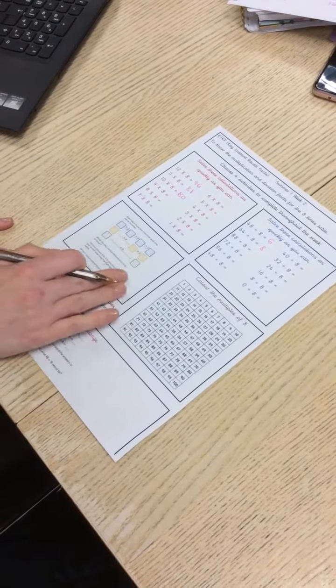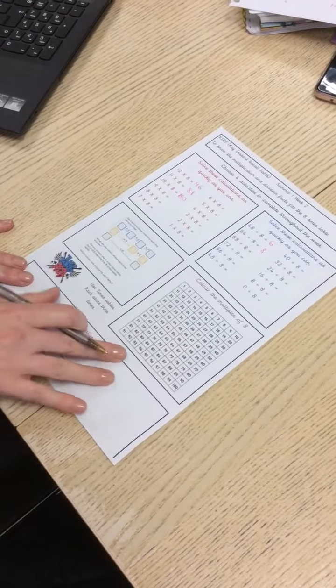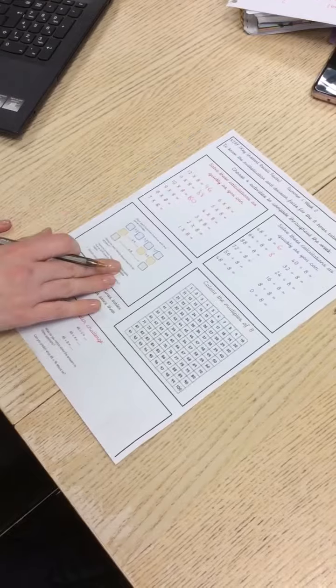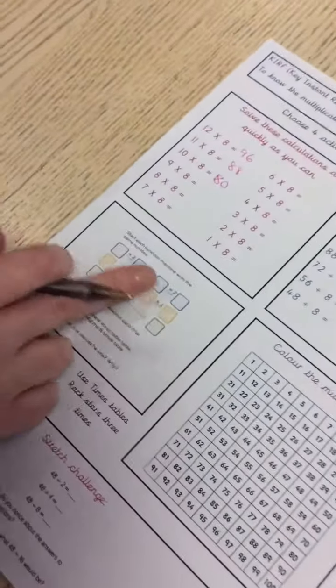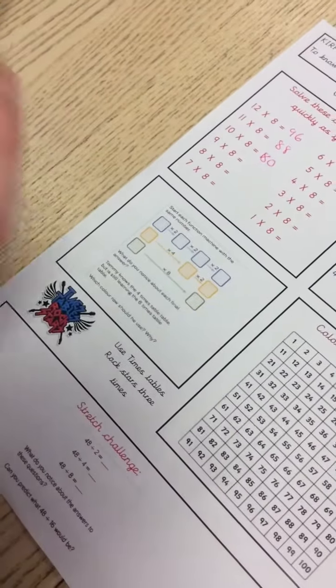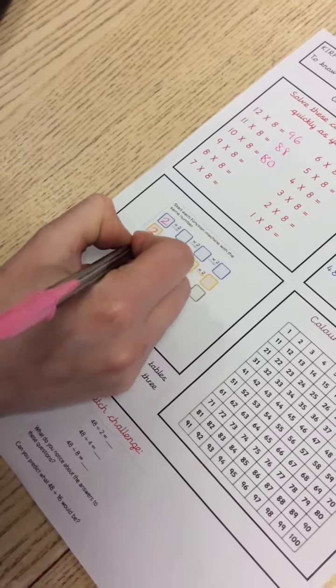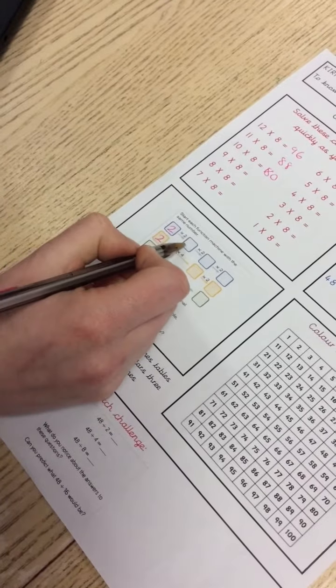Then you've got some different problems to solve, and these will be different each week. For example, this one says start each function machine with the same number. So I'm going to pick a number, I'm going to try 2 and see what happens. Follow the rule that it's telling me to do. So 2 times 2 equals 4, 4 times 2 is 8, 8 times 2 is 16.